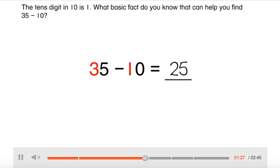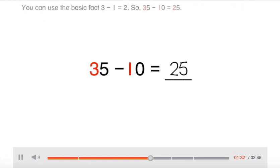What basic fact do you know that can help you find 35 minus 10? You can use the basic fact 3 minus 1 equals 2. So 35 minus 10 equals 25.